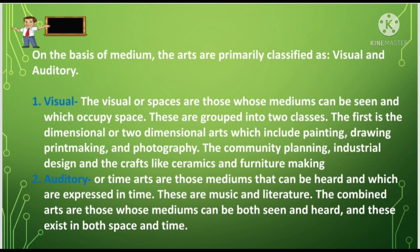It means we can see these artifacts. For example, we have chairs, we have blackboards in the classroom, we have windows. Those are the visual arts, and these are grouped into two classes. The first is the two-dimensional arts, which include painting, drawing, printmaking, and photography. There is also community planning, industrial design, and crafts like ceramics and furniture making.